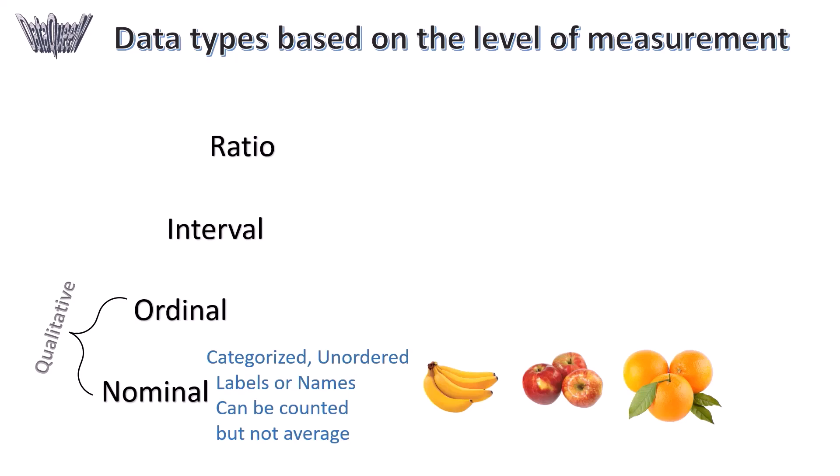Ordinal data type represents data that have the properties of nominal data and rank of the data is meaningful. For example, survey questions like do you like apple, and they have answer scales like strongly disagree, disagree, neutral, agree, strongly agree.